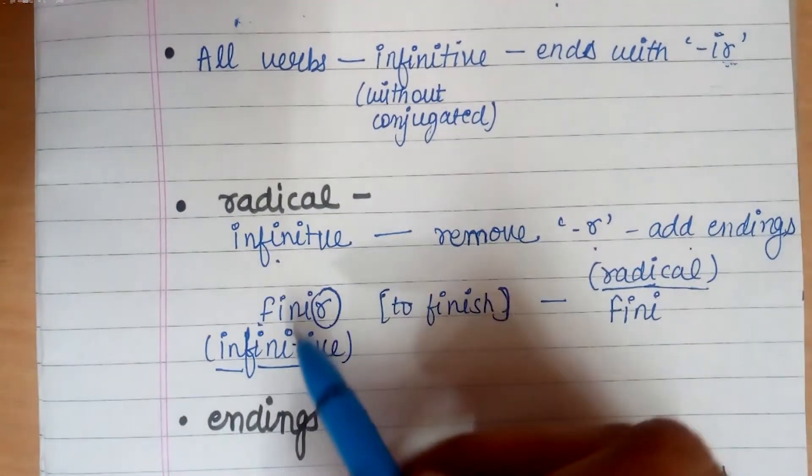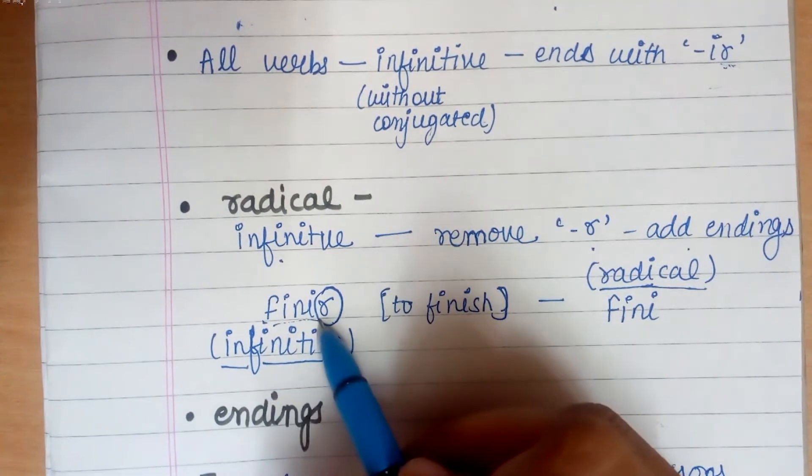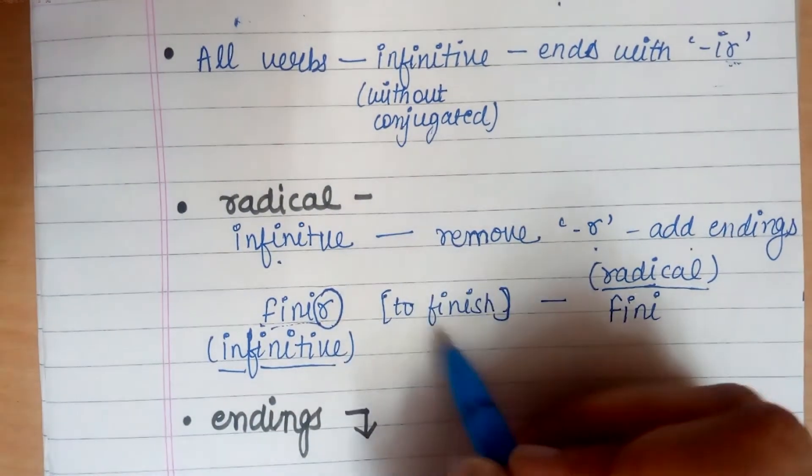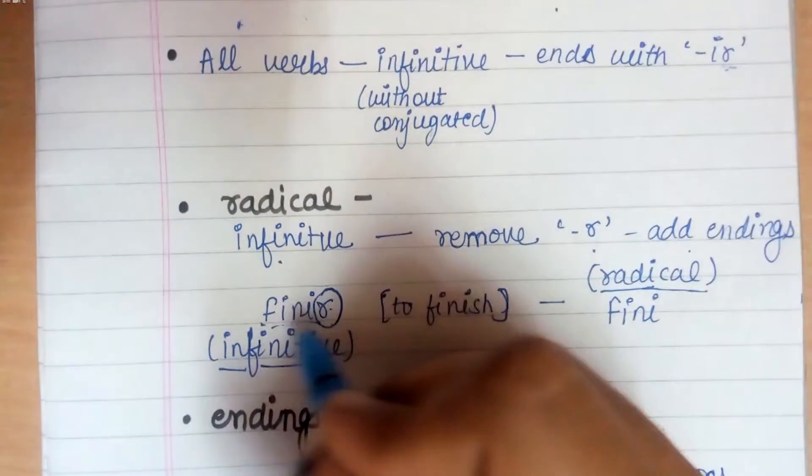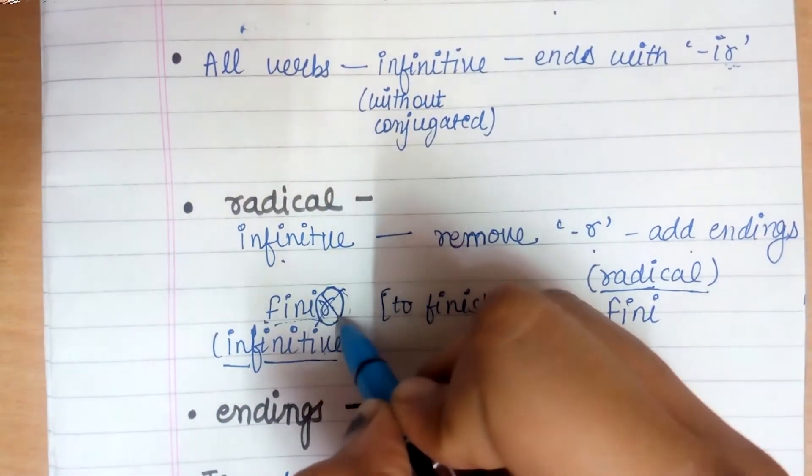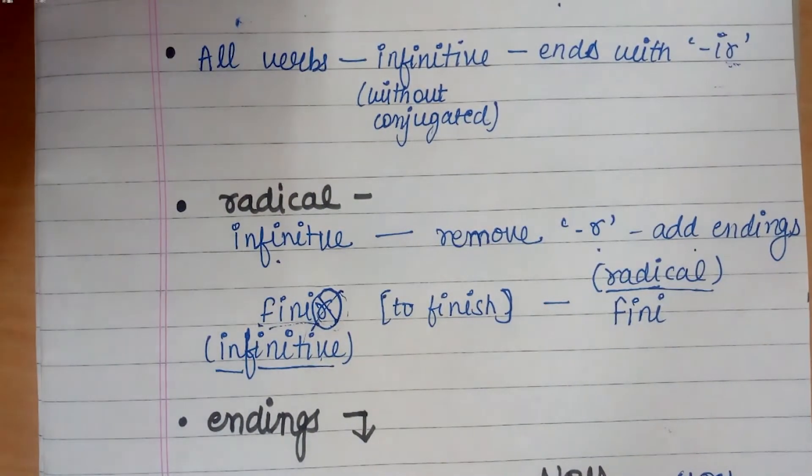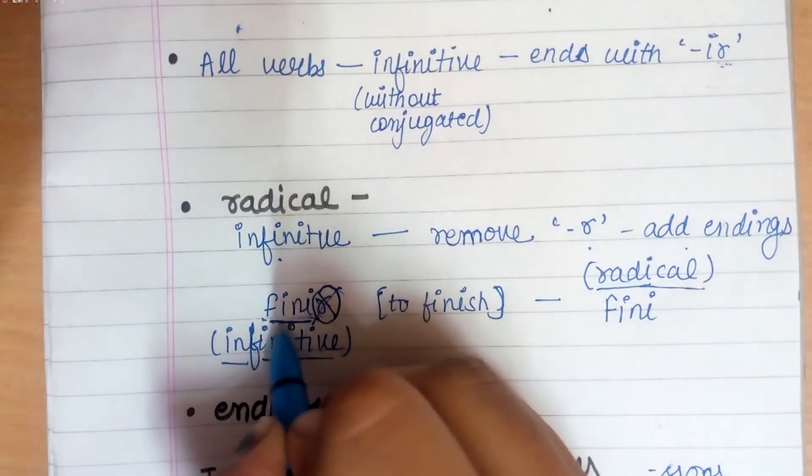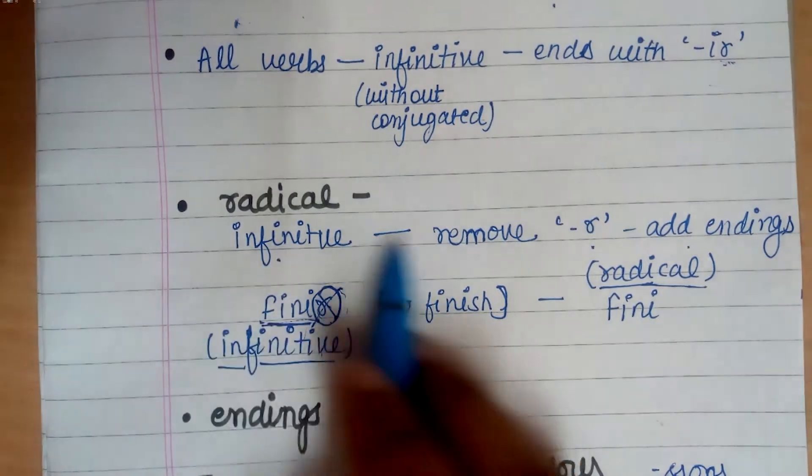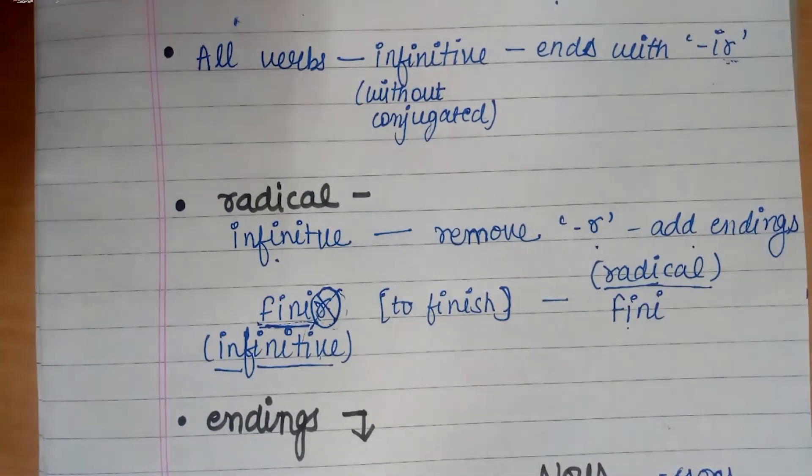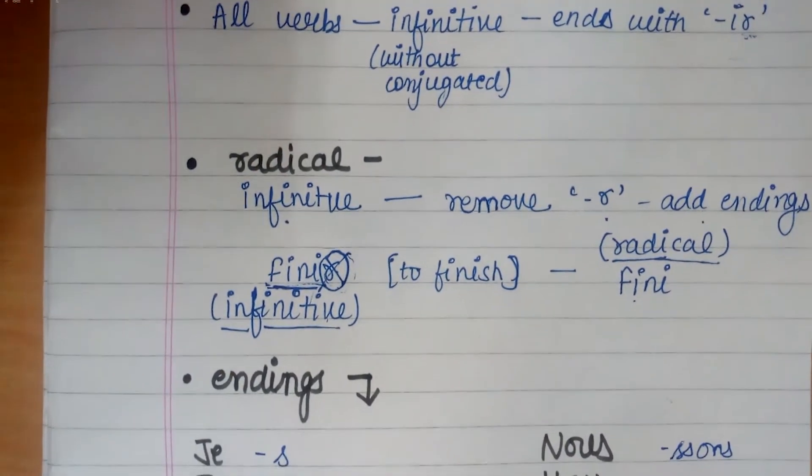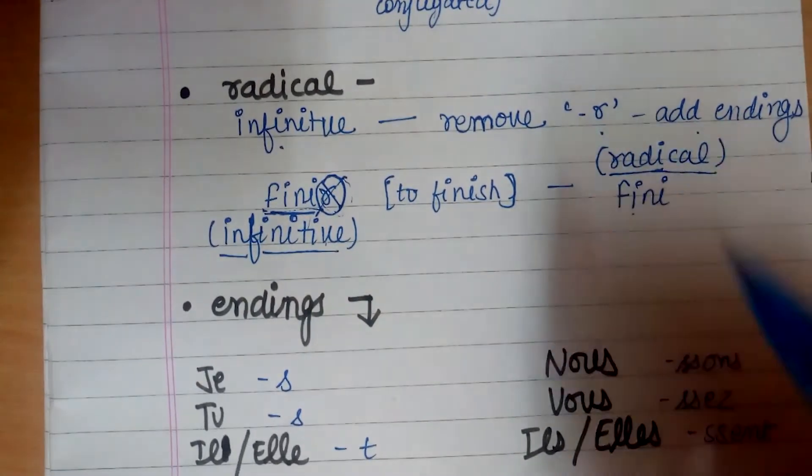For example, it is the verb finir which means to finish. It is the infinitive form. So we'll take the IR and we will remove this IR, and the remaining part F-I-N-I, fini, is going to become its radical. This way IR group is made of radical.